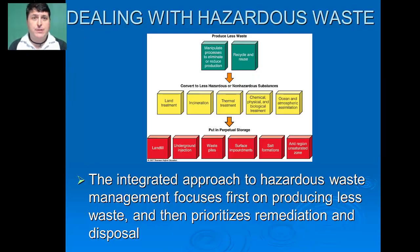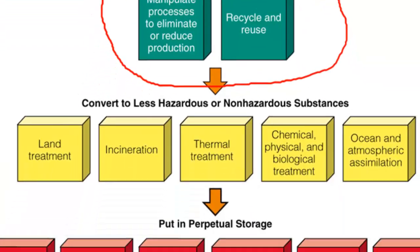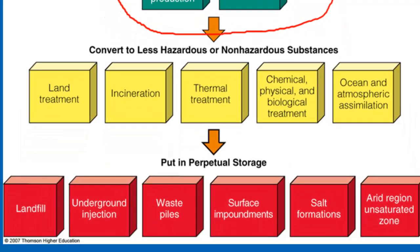When dealing with hazardous waste, we want to have an integrated approach. Our first priority would be to produce less of it, by manipulating our manufacturing process or recycling and reusing hazardous material. If we do produce hazardous waste, our second priority would be to convert it into a less hazardous or non-hazardous form through treatment or incineration. If we can't do that, our final step would be perpetual storage, such that it sits in situ, unable to harm people or the environment.